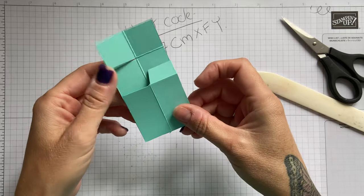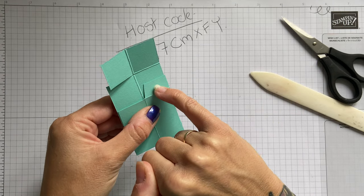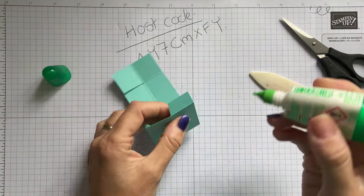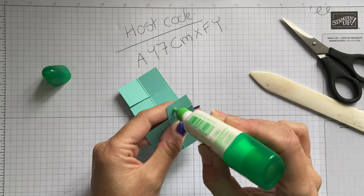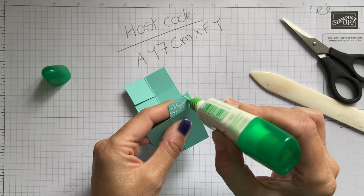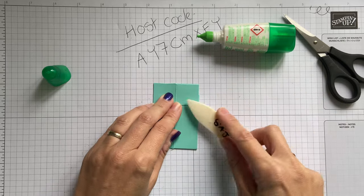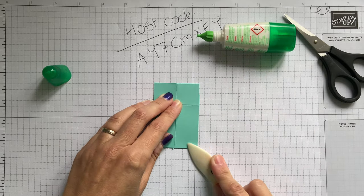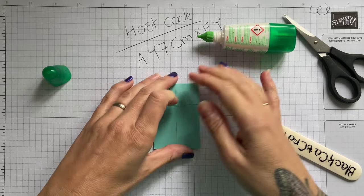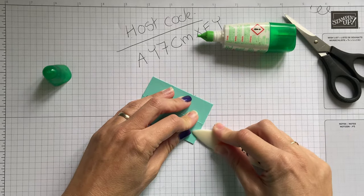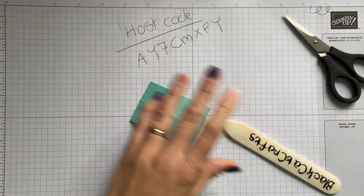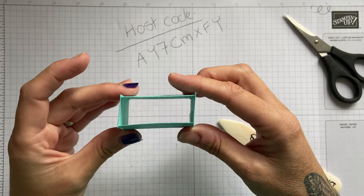With this, we're going to fold this over on this little one here. I'm just going to pop a little bit of glue. Fold that over.